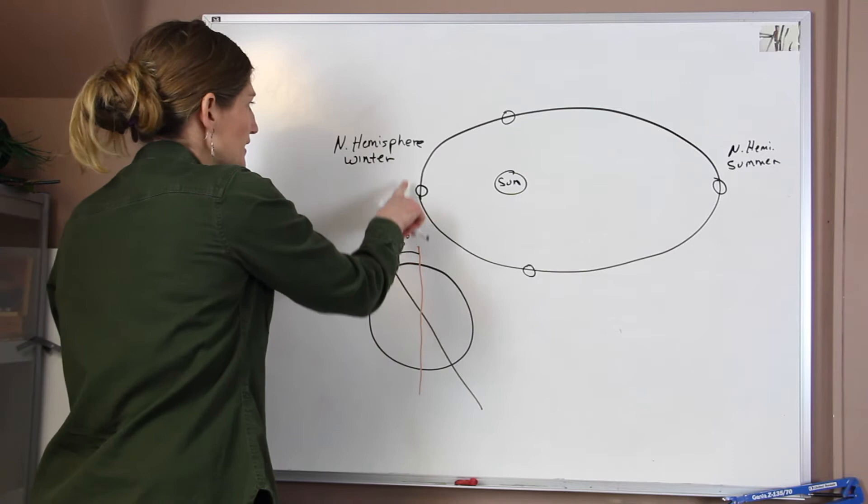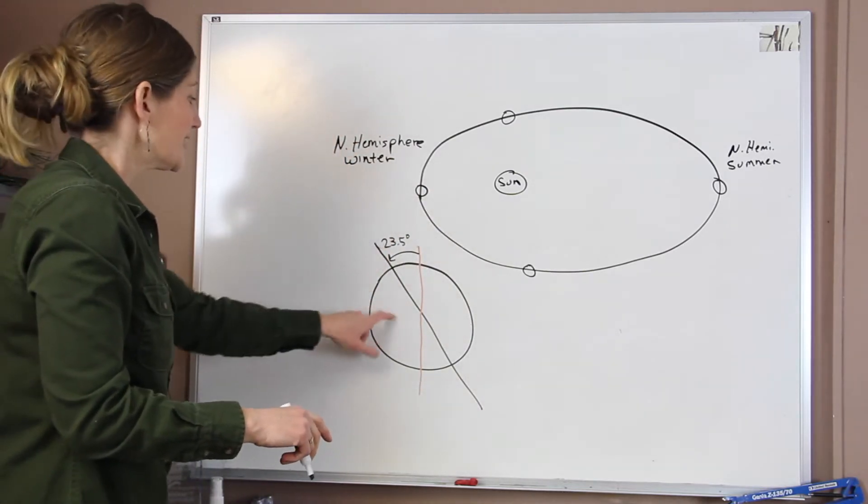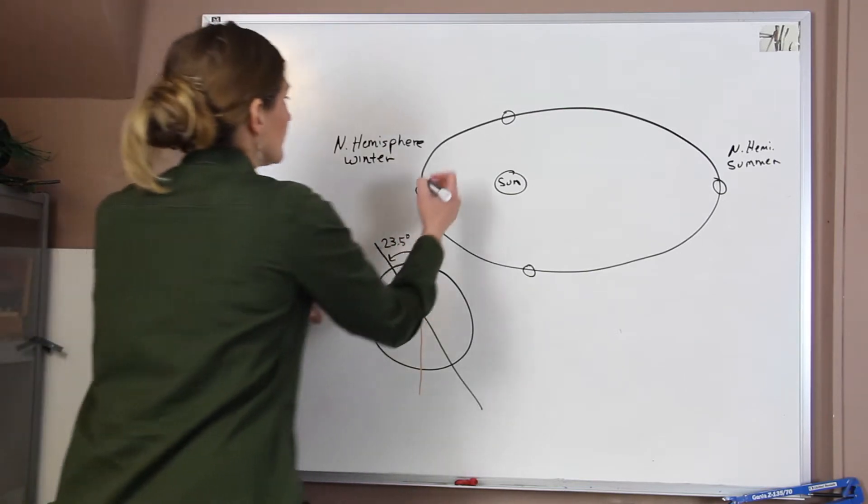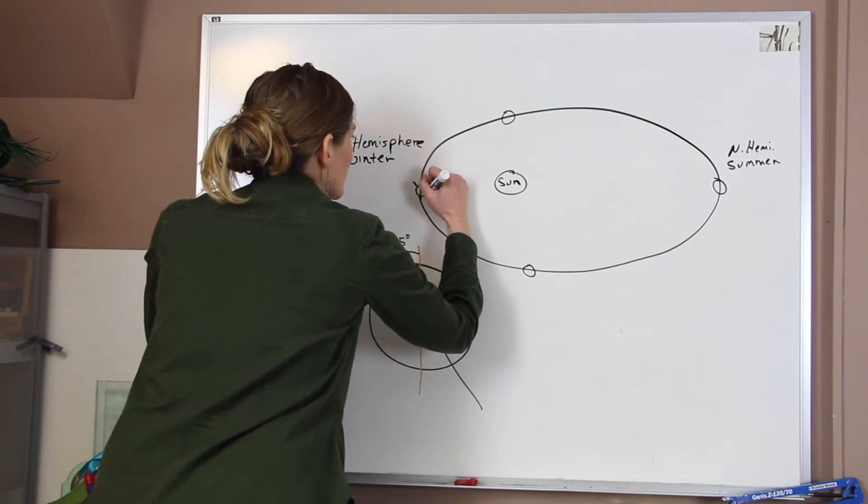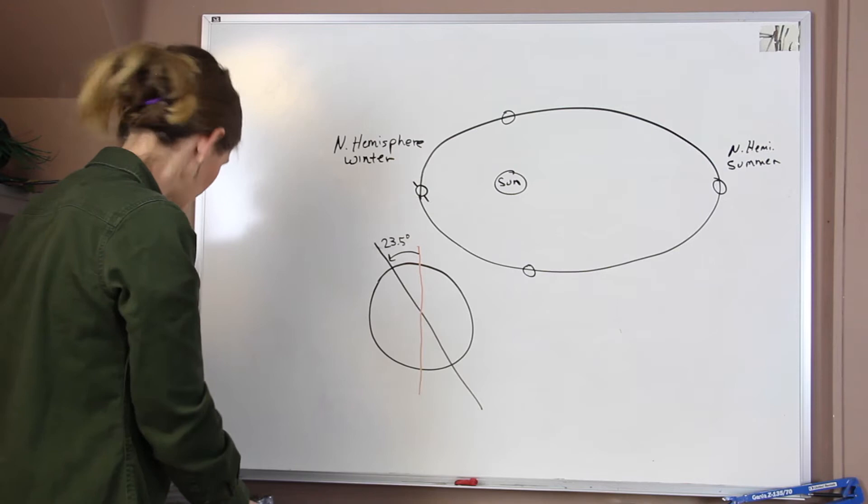Now in this first scenario, what's happening when we have the northern hemisphere's winter is that the Earth is actually tilted away from the sun, the northern hemisphere is. So we can kind of draw that down like this. So it looks just like this picture right here. So what's happening?